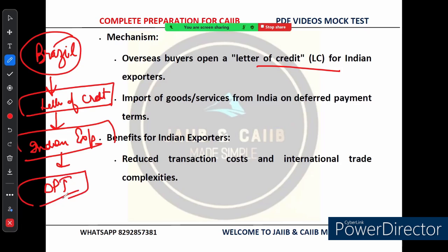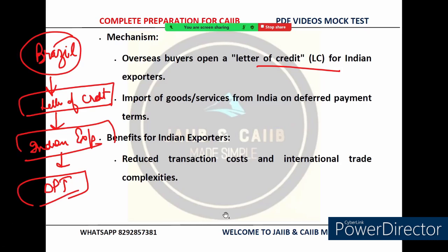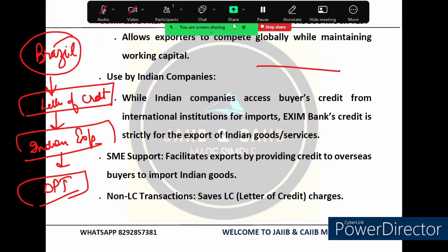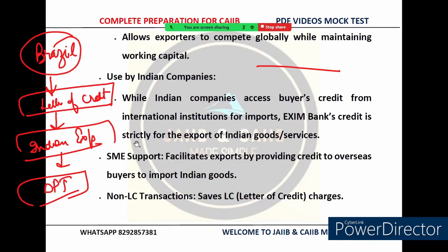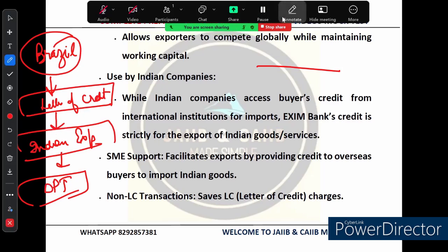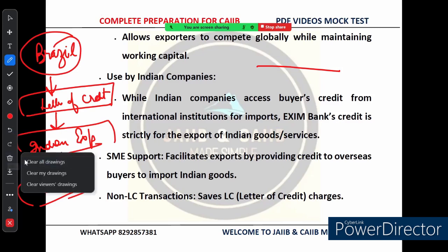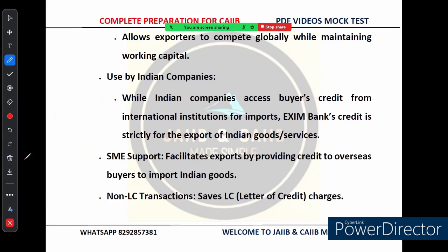The benefit for the Indian exporter is that they can access new markets, while the overseas buyer gets favorable credit terms to make the deal happen. Buyer's credit is strategically important because it promotes Indian exports by lowering financial barriers for overseas buyers. The Brazilian firm opens a Letter of Credit as a guarantee to the Indian exporter, and payment is made on a deferred basis — not immediately, but after a certain date.